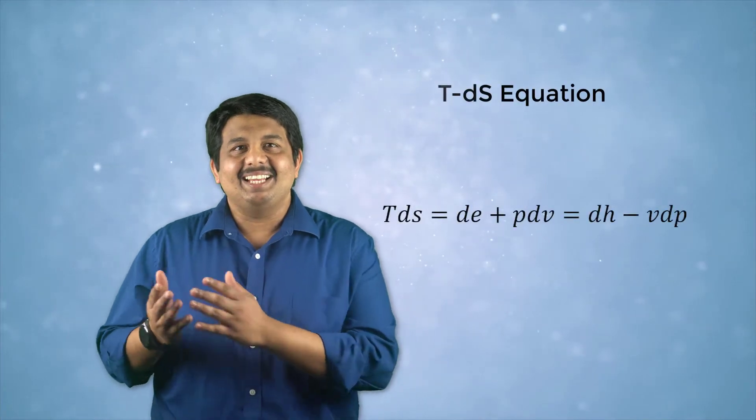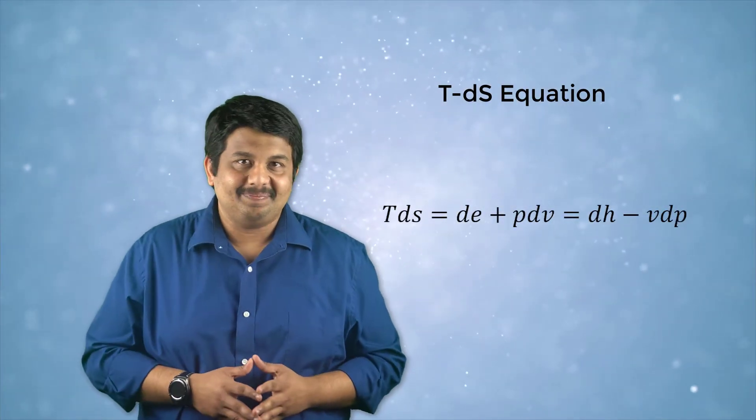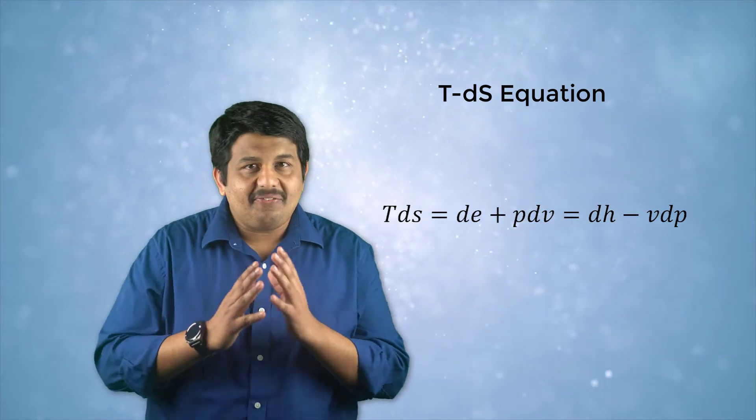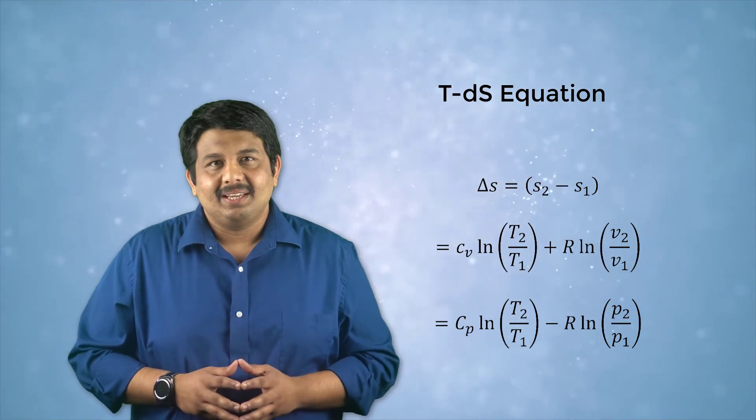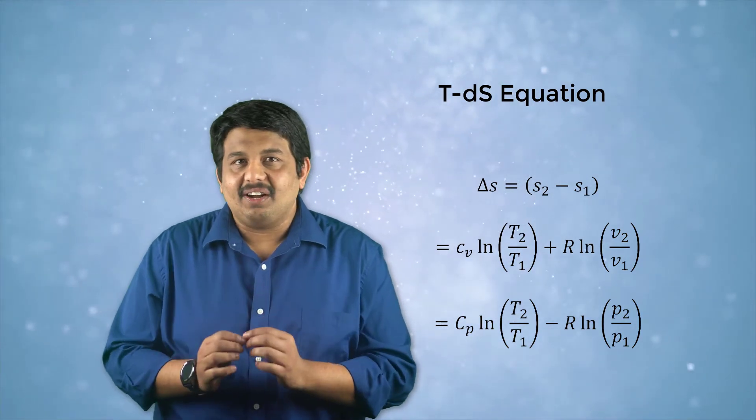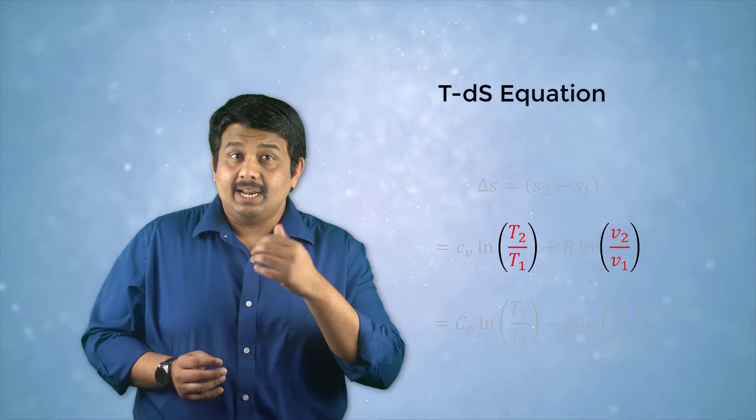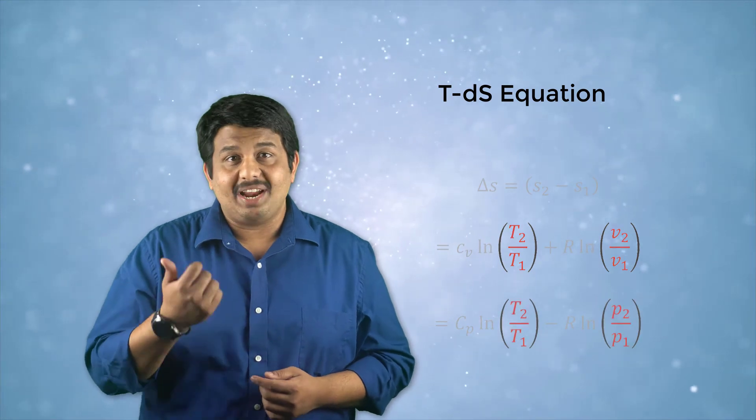Now let us combine the first and the second laws. The resulting equation is a very useful relation between entropy and other thermodynamic properties. This equation is known as the Tds equation. For a calorically perfect gas, this can be rewritten as shown here. This equation can be integrated to obtain the change in entropy as the thermodynamic state of the system changes from state 1 to state 2. We can see that entropy is a function of two thermodynamic variables: temperature and specific volume or temperature and pressure.